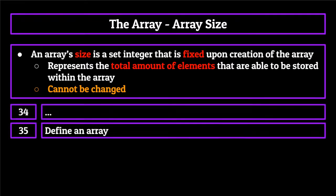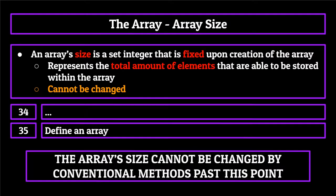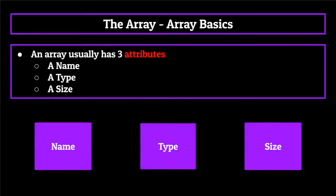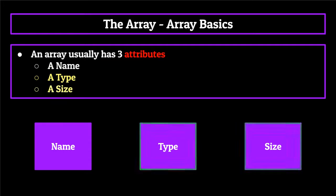Once you write the line of code which instantiates an array, you give it a defined size or fill it with elements until it has a defined size — and at that point, the array size cannot be changed by conventional methods. This is actually pretty rare for a data structure, and it may seem counterintuitive and useless. But later on, when we talk about an array's efficiency, you'll see that this is for a specific reason and not just to be annoying to the programmer. So there you have it — the three attributes of an array: a name to reference it, a type to fill it with, and a size to control it.